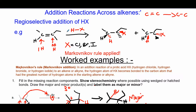Welcome. We are going to talk about additional reactions across alkenes. After you add across the alkene, the double bond will be converted to a single bond. One example of such an addition is regioselective addition of HX, X being a halogen — either chlorine, bromine, or iodine. This reaction is called hydrohalogenation.